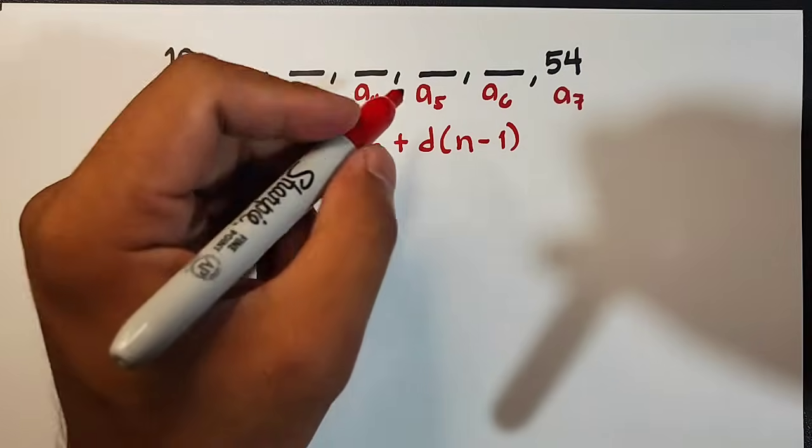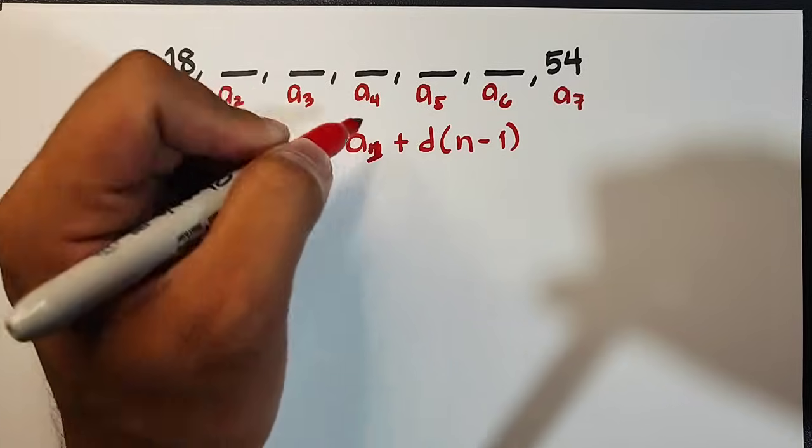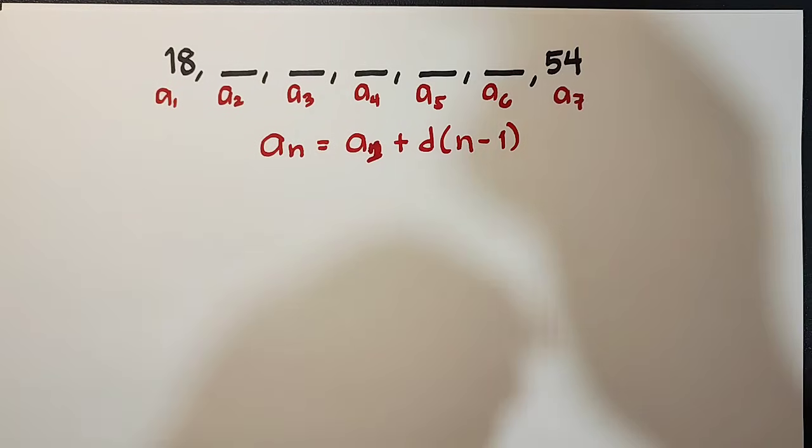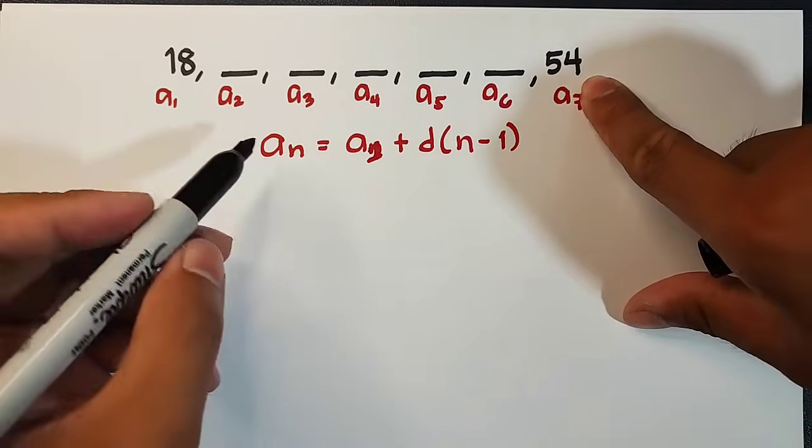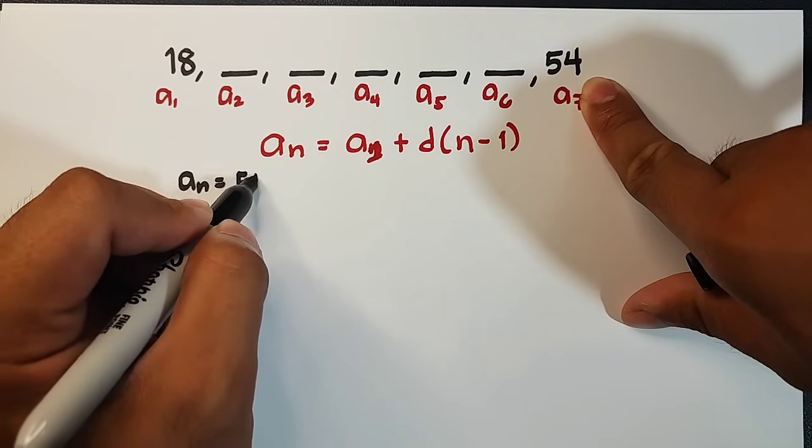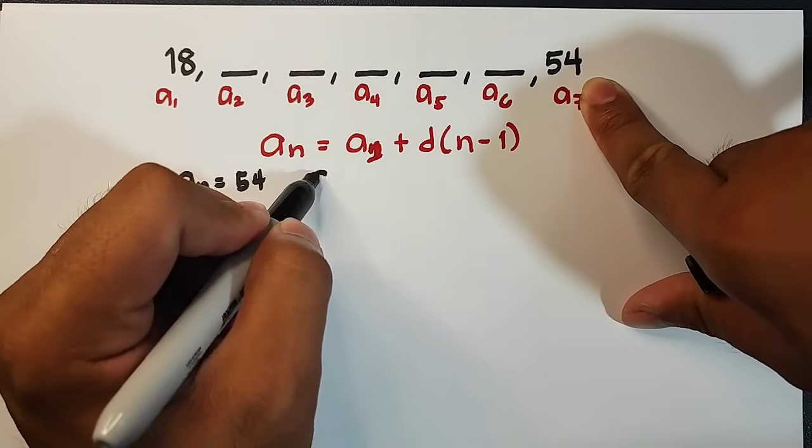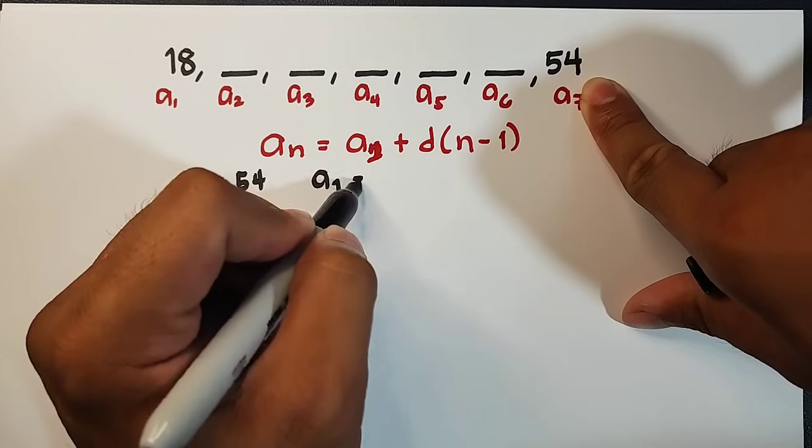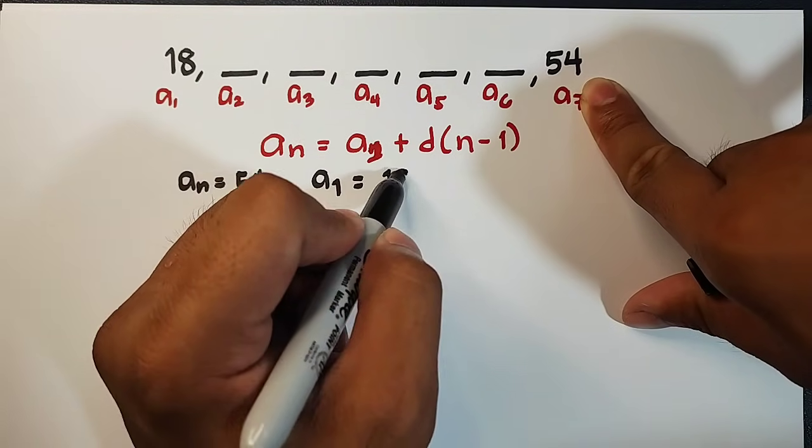Here. Oh, by the way guys, this is a sub 1. Now, here, in your formula, your a sub n will serve as the last term which is your a sub 7. So a sub n is equal to 54. Your a sub 1 here is equal to your first term which is equal to 18.